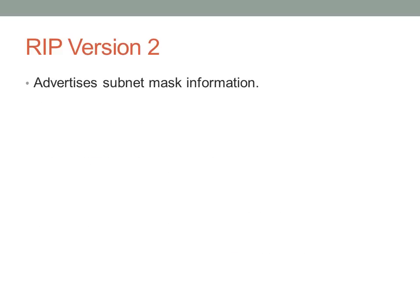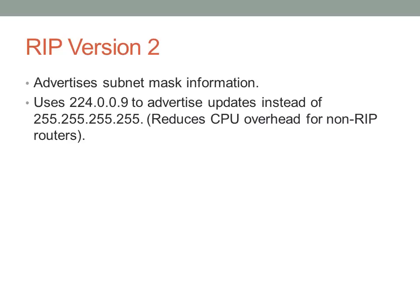RIP version 2 is a bit nicer — it actually advertises subnet mask information, so if you're running version 2 you can use VLSM. Instead of using the IPv4 broadcast address (all 255s), it uses its own multicast address 224.0.0.9 to advertise updates. With broadcast, every device must process the frame regardless of whether it's intended for them. So if you're running RIP version 1, updates are sent as broadcasts, and all clients, access points, and every device must process that frame — consuming CPU and bandwidth. With the multicast address 224.0.0.9, the frame is discarded by devices not listening for RIP advertisements, and only RIP-enabled devices process it.